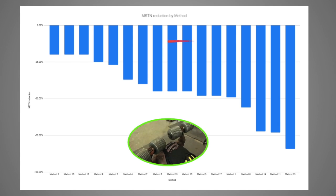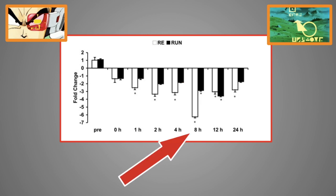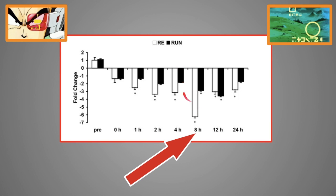Now, number one way to drop myostatin is obviously through training. Literally just getting your ass in the gym and lifting weights is going to give you the biggest drop in myostatin. The only drawback is that the biggest drop you get in myostatin from training is at the eight-hour mark. After that, myostatin starts to slowly go back towards baseline, which is once again why it is so important to train with high frequency if you're natural.